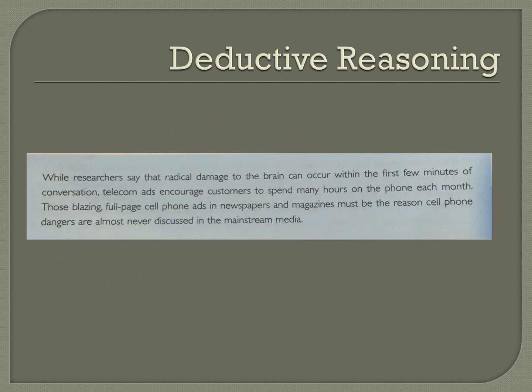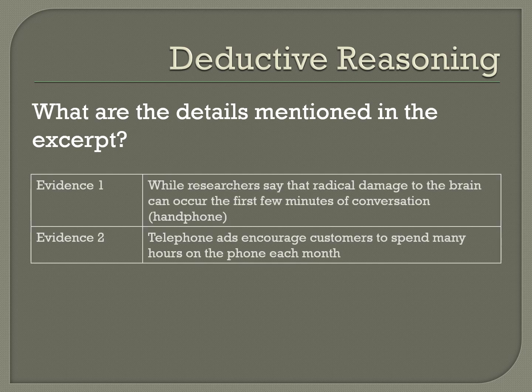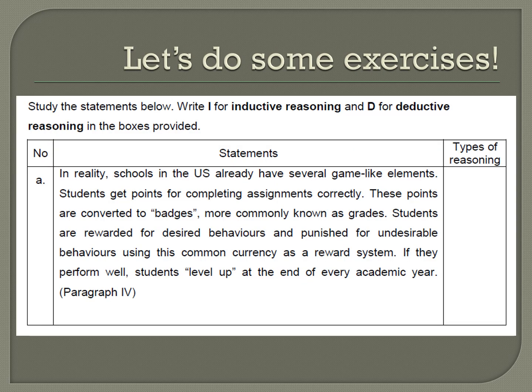Let us look at this example. There are two pieces of evidence in the excerpt. These pieces of evidence do not present specific instances — they begin with general instances. However, the conclusion derived from these general instances is very specific: 'Those blazing full-page cell phone ads in newspapers and magazines must be the reason cell phone dangers are almost never discussed in the media.' The conclusion is specific, talking about a specific situation and circumstance. Here are some exercises you can do on your own.